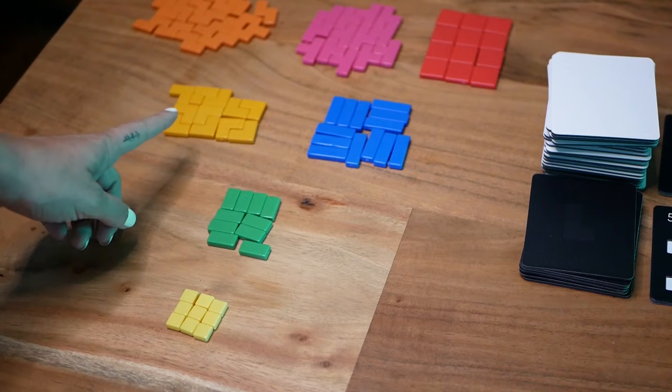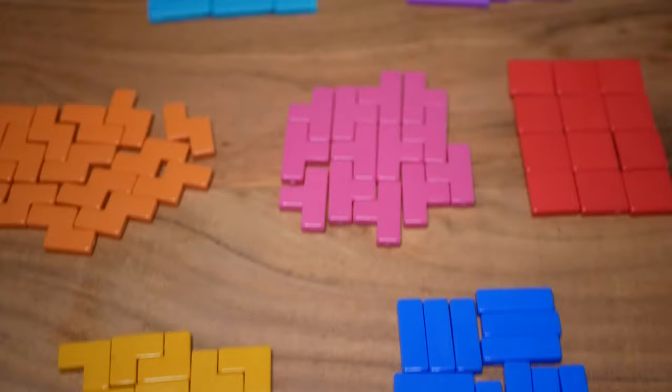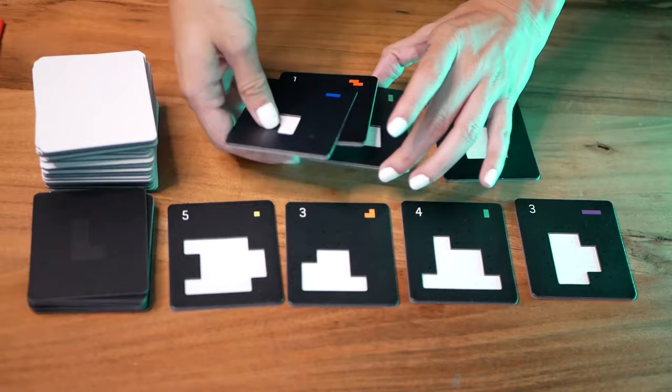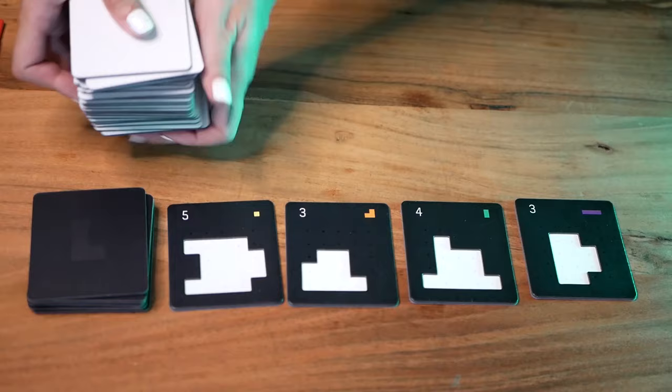Another action is the recycle action, in which you choose one of the rows of puzzles, remove all the puzzles from that row, place them on the bottom of the corresponding deck in an order of your choice, and then refill the row with four new puzzles from the top.